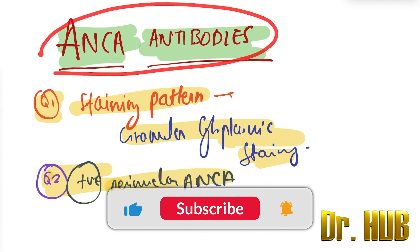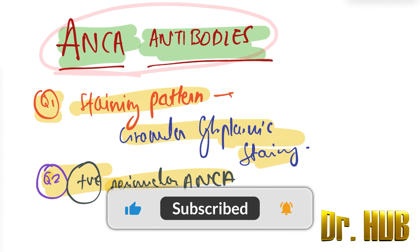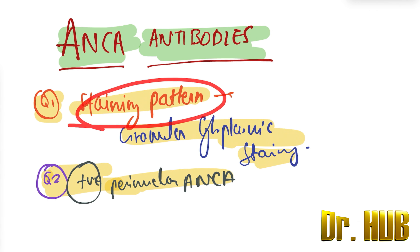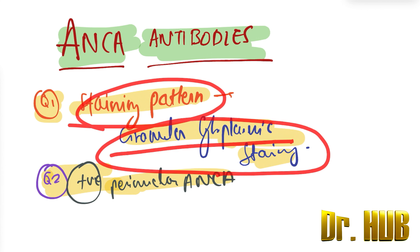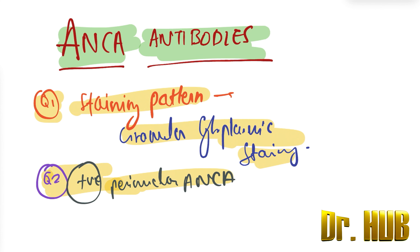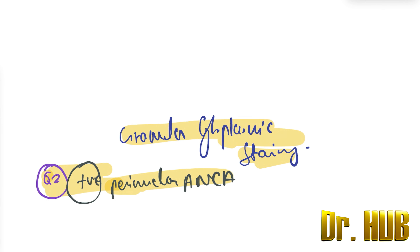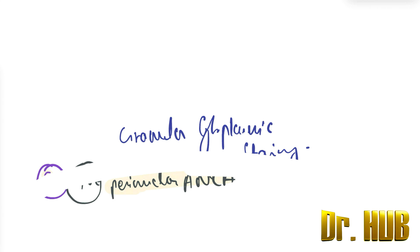The topic here is ANCA antibodies. The first question is: which type of ANCA shows a granular cytoplasmic staining pattern? The second question is: in what conditions is the perinuclear ANCA predominantly positive? This video will find these answers and learn in detail.